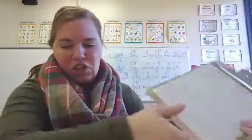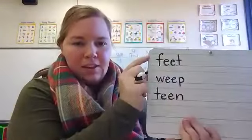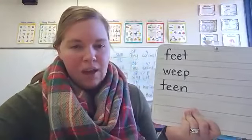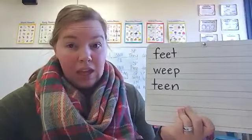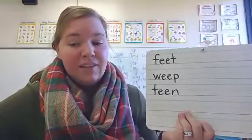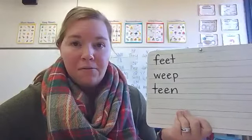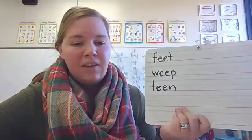Put your practice sheet away for right now. Echo these words and listen to the sound in the medial position: feet, weep, teen. What sound do you hear in the medial position? E — very good. Look at the words on my board: feet, weep, teen. What is making the E sound? The E and E. Does anyone know what E-E is called? It's a digraph because two letters are making one sound. Is it a vowel digraph or a consonant digraph? It is a vowel digraph because it is made up of vowels.